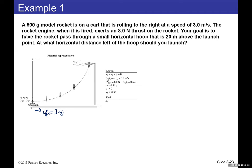We take the launch instant as our reference position: x₀ = y₀ = 0 at t = 0. Because the rocket is on the moving cart, it inherits the cart's horizontal velocity, so the initial horizontal velocity is v₁ₓ = 3 m/s. The initial vertical velocity v₁ᵧ = 0.